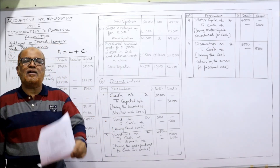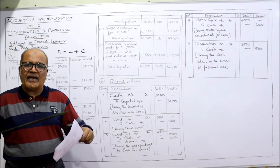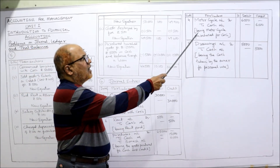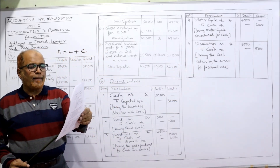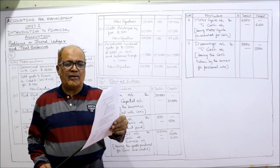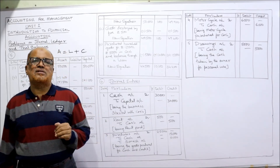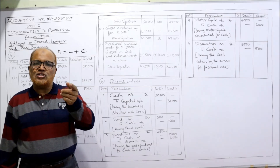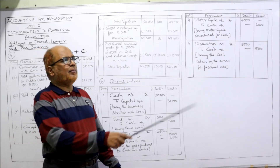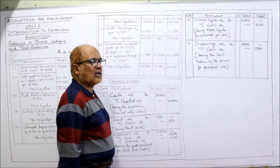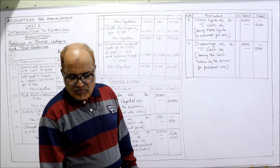Fourth: bought motorcycle for 6,000 cash — Motorcycle account Dr to Cash 6,000, being motorcycle purchased for cash. Fifth: cash 5,000 taken by proprietor for personal use — drawings. Cash is going out so it is credited; Drawings account Dr to Cash 5,000, being cash withdrawn from business for personal use. This completes problems five and six in this video.